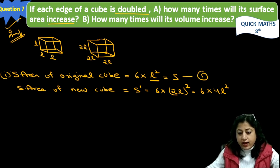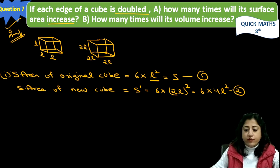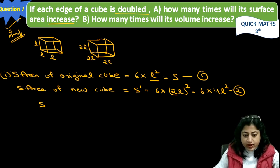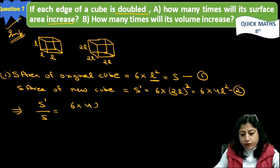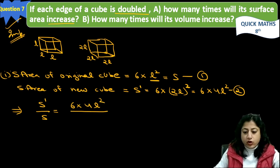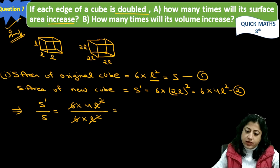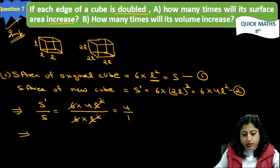This is first and this is second. We have to calculate how many times, it means surface area of new cube, S dash upon S, we have to calculate. Now, new cube is 6 into 4L square and the original is 6 into L square. Now 6, 6 will be cancelled out, L square, L square will be cancelled out, it is 4 by 1.